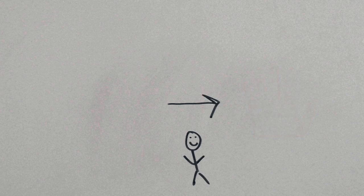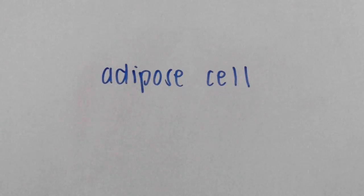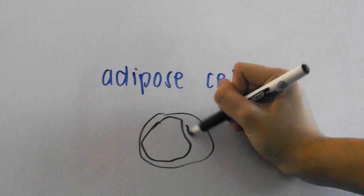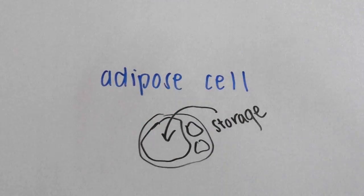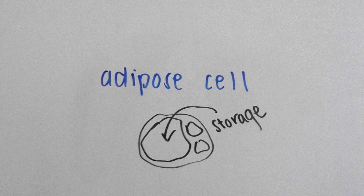The same thing goes for cells. One type of cell we'll look at is a fat cell or one in adipose tissue. It has a large storage area while its nucleus and cytoplasm are pushed to the side so it can store all of its energy.